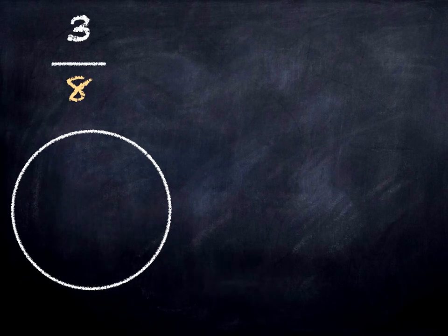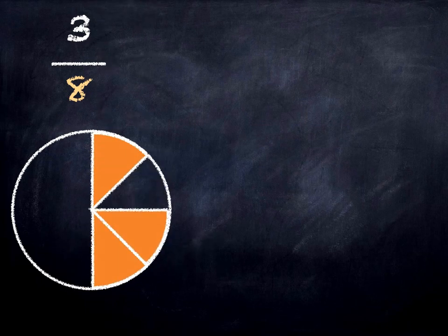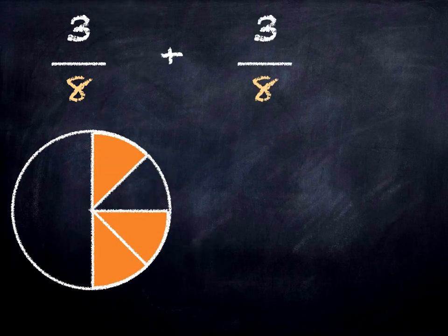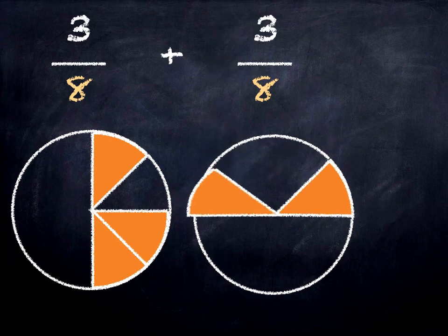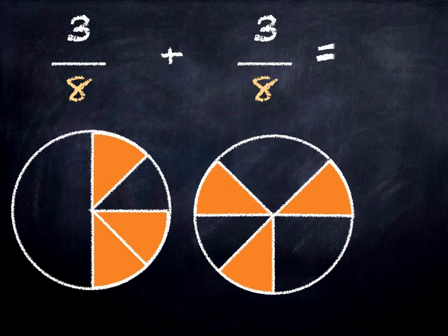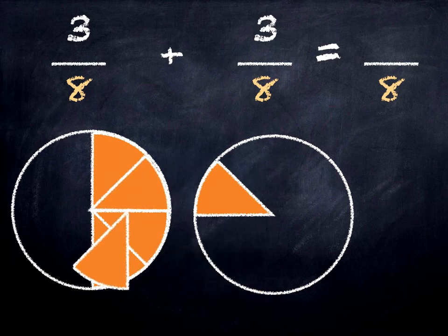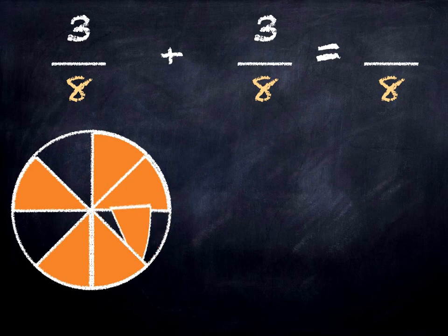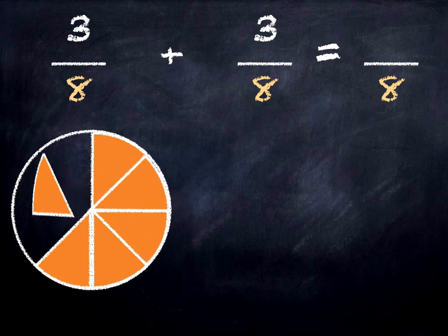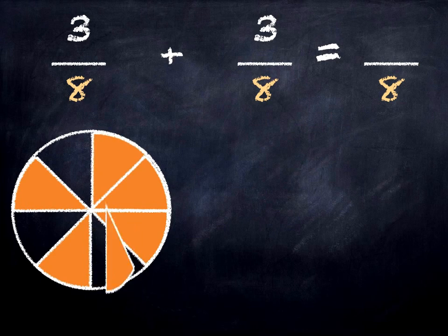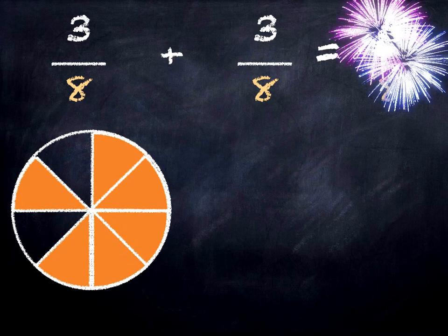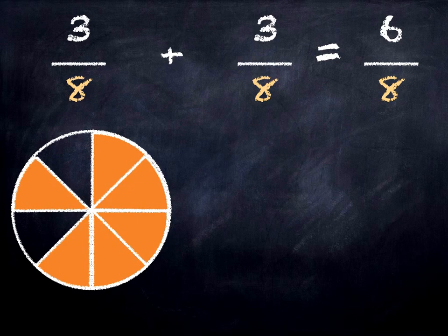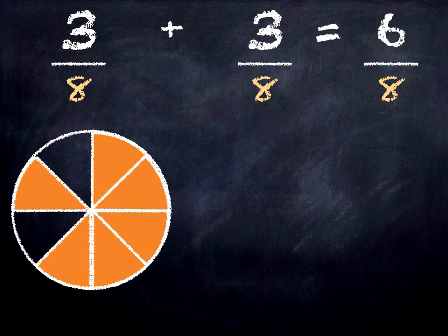Three eighths plus three eighths is how many eighths? Let's put them all together. What do we have? We have six eighths. Three eighths plus three eighths equals six eighths. Three plus three equals six.